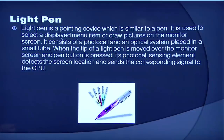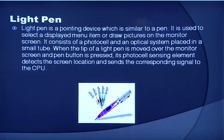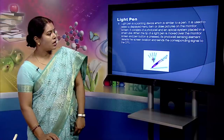Then the next we have is a light pen. It is a pointing device similar to a pen and is used to select a displayed menu item or draw pictures on the monitor screen. It consists of a photocell and an optical system placed in a small tube. When the tip of the light pen is moved over the monitor screen and the pen button is pressed, its photocell sensing element detects the screen location and sends the corresponding signal to the CPU.